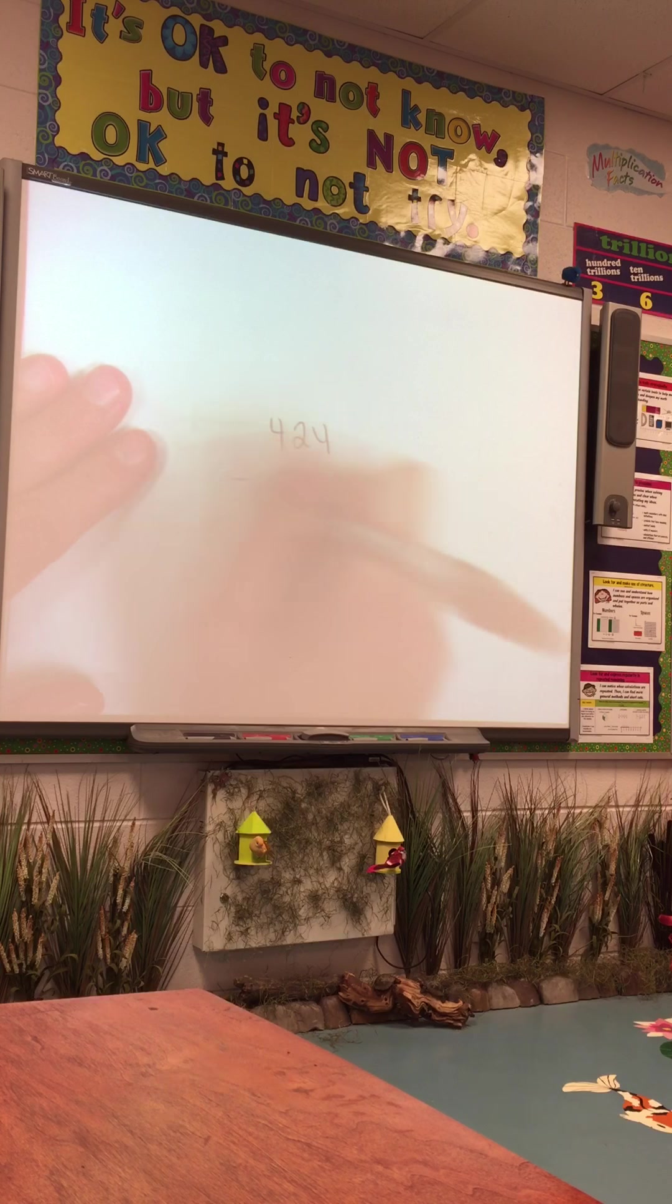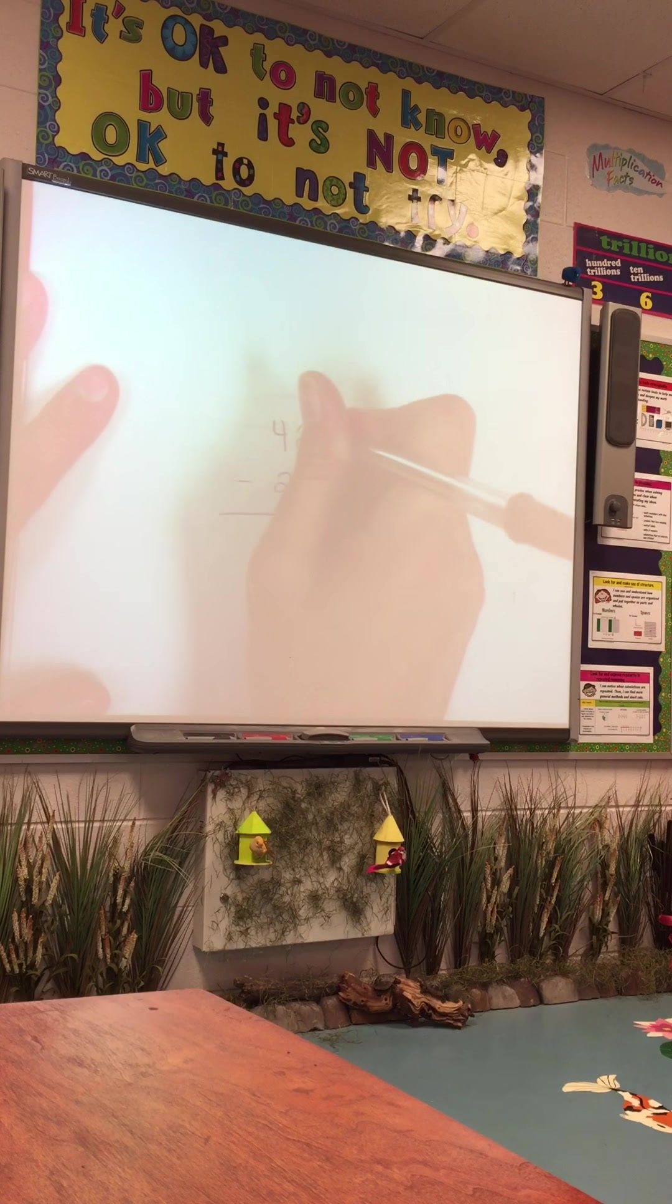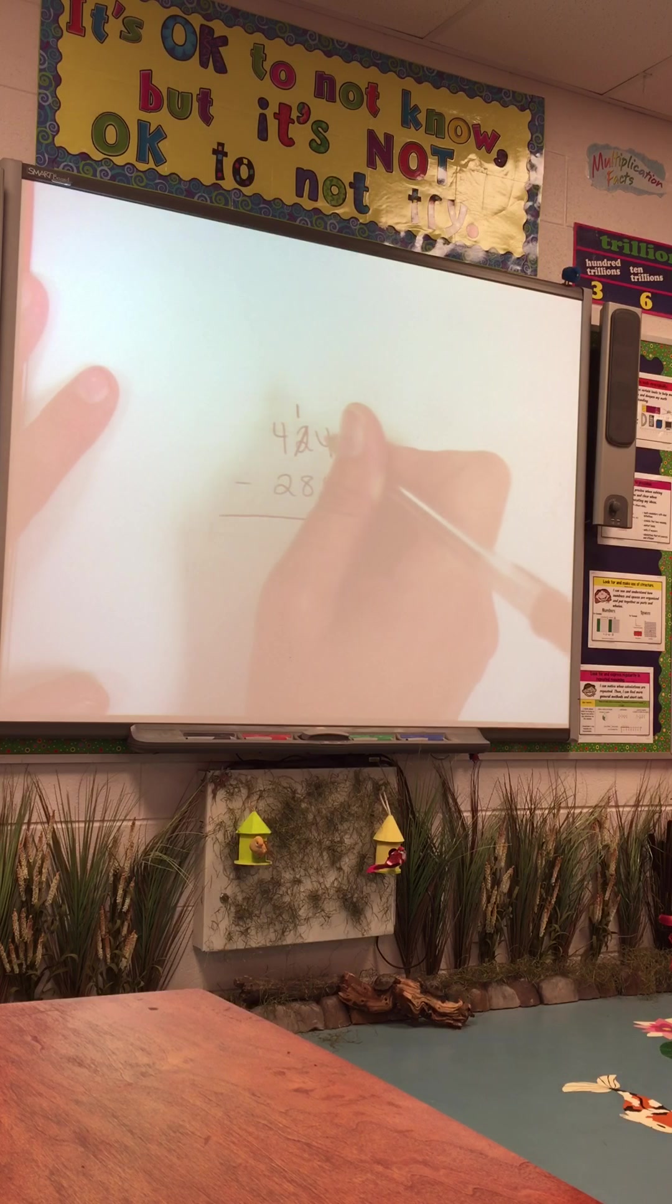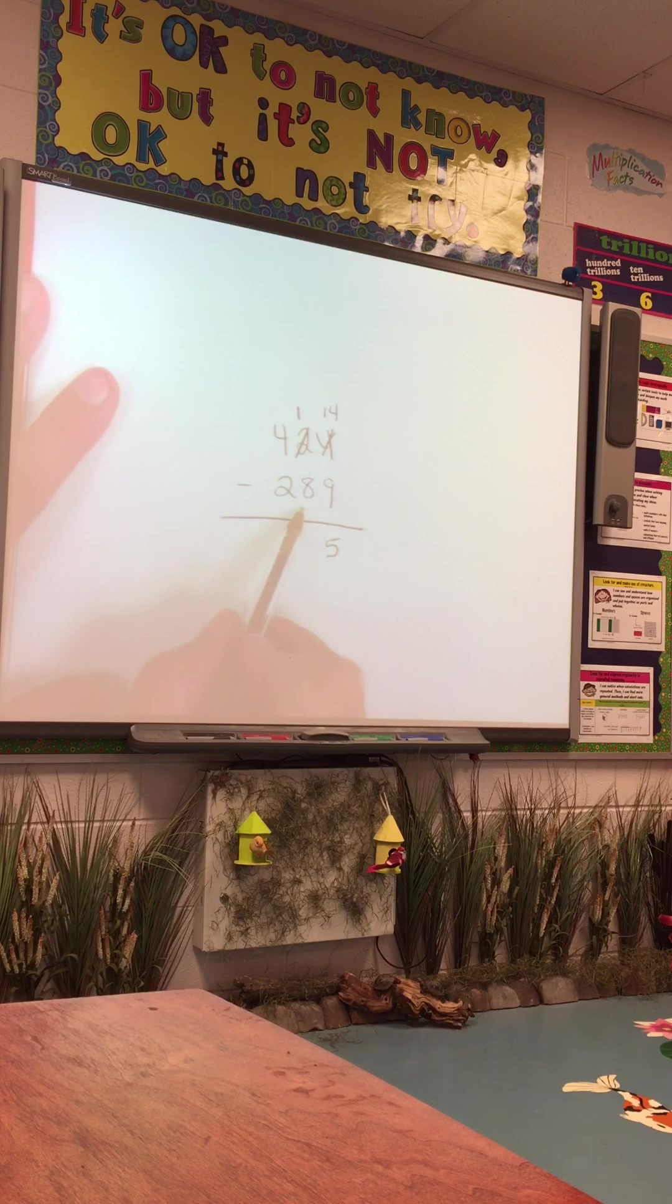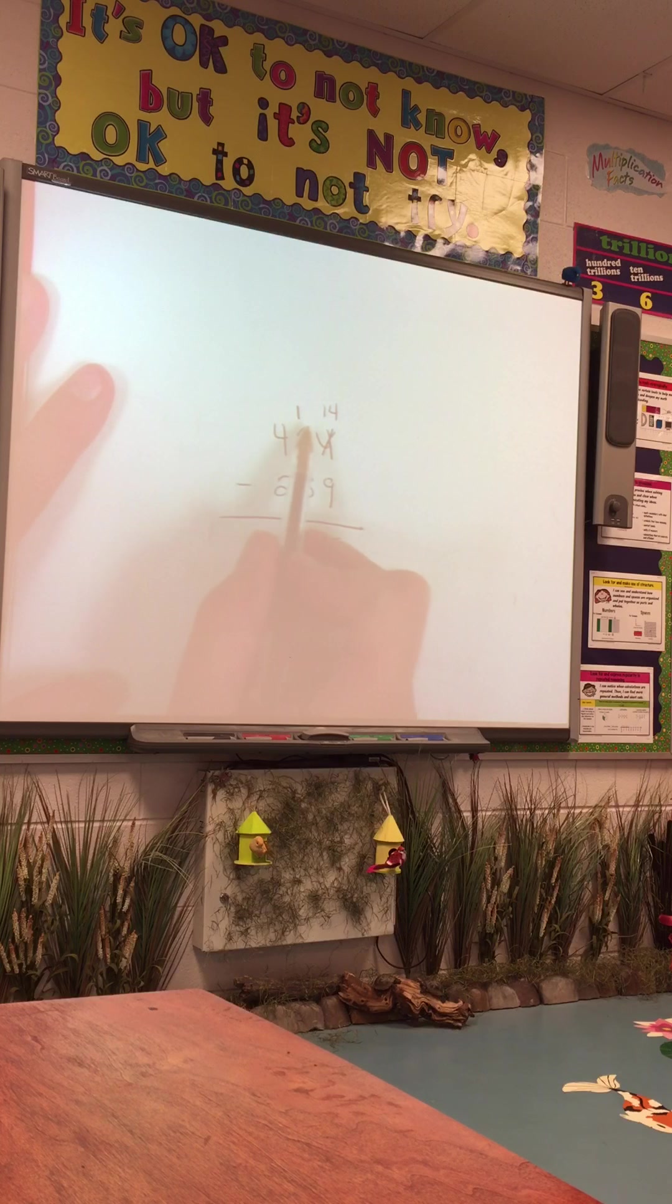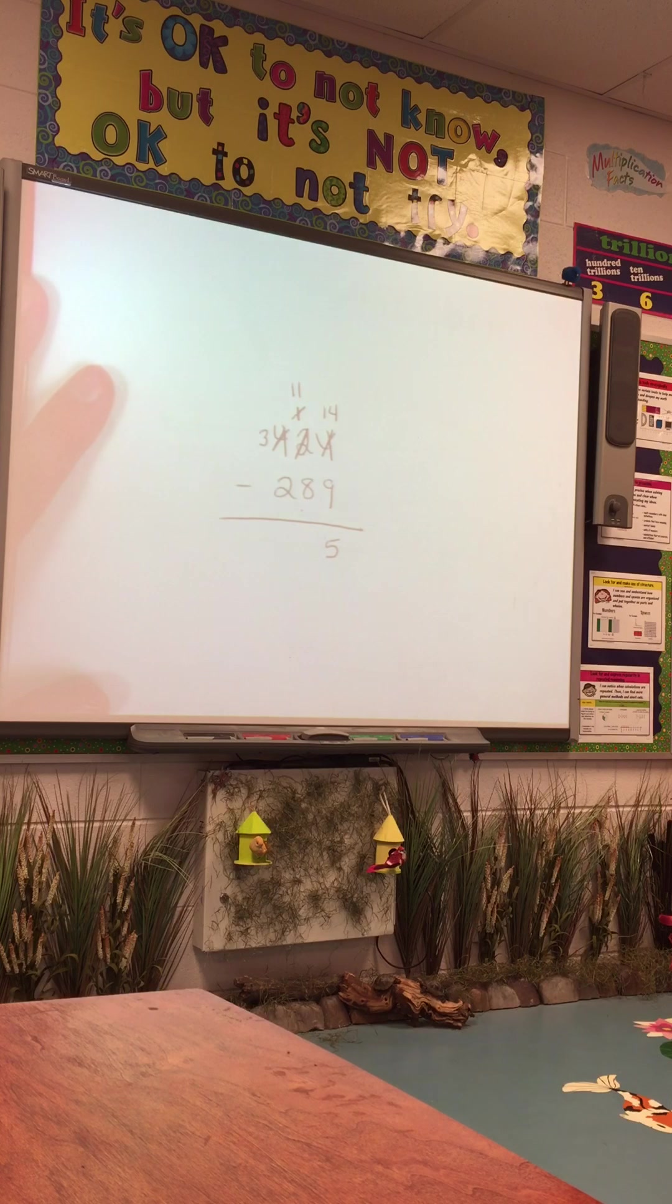So if we take 424 minus 289, I can't take 9 ones from 4 ones, so I have to make a trade. I trade 1 ten, which leaves me with 1 ten, and add 10 ones to the 4 ones I have. So 14 minus 9 leaves me with 5. Now I'm at my tens. I can't take 8 tens from 1 ten, so now I